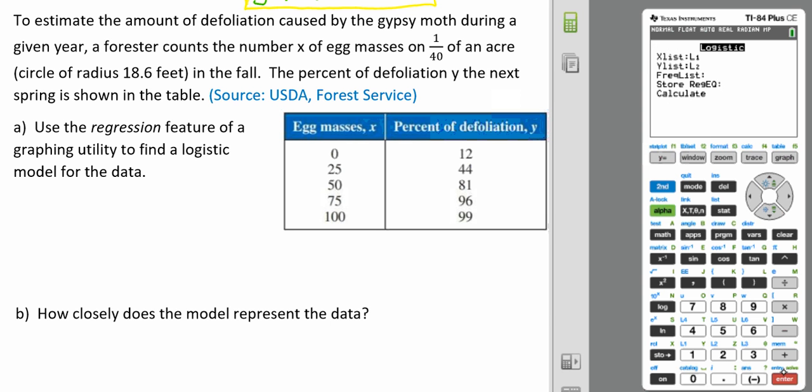We're going to hit Enter. We want it to be our list one and our list two, and you want to make sure that you've got that in there. We're going to hit Calculate, and that's going to give us our A, our B, and our C values,